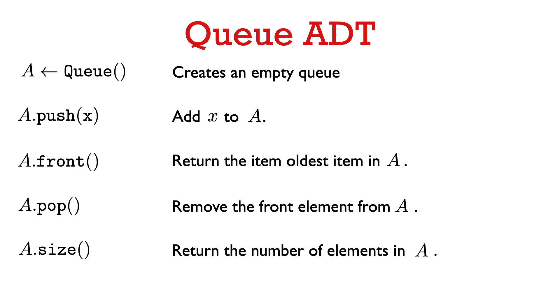Here's the abstract data type for a queue. We can add an element to the queue with the push operation. We can look at the oldest item in the queue with the front operation. We can remove the oldest element with the pop operation. And we can get the number of elements in the queue with the size function.